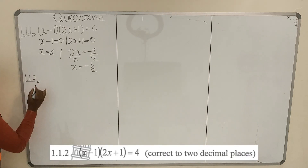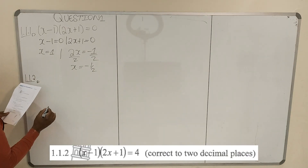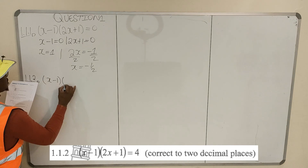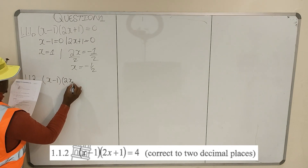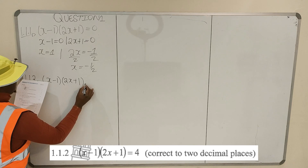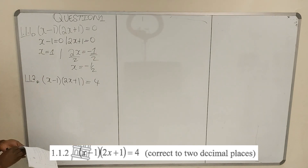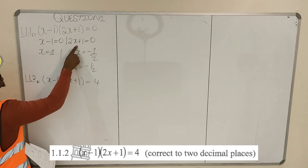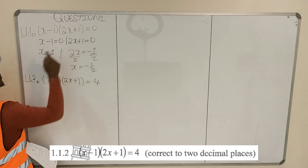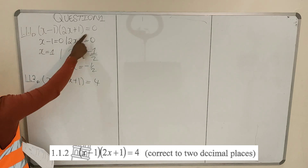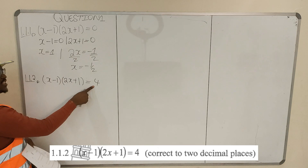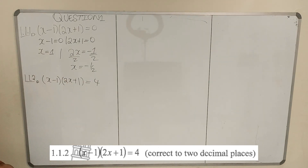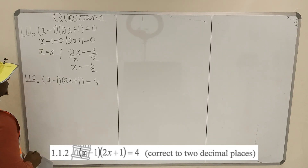1.1.2: we have (x minus 1)(2x plus 1) is equal to 4. This looks similar to the first one except there is 4 on the right-hand side. You can only use the zero-product property when you have 0 on the right-hand side. If you have a non-zero number, then you have to multiply the brackets out.